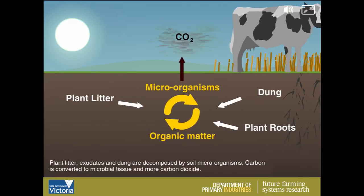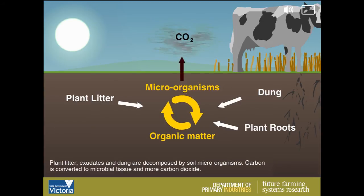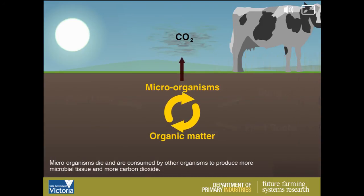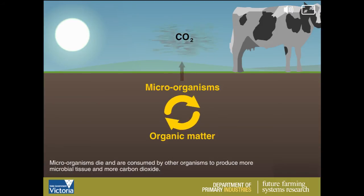Plant litter, exudates, and dung are decomposed by soil microorganisms. Carbon is converted to microbial tissue and more carbon dioxide. Microorganisms die and are consumed by other organisms to produce more microbial tissue and more carbon dioxide.